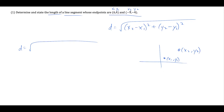We just plug right into the formula. We have x2 minus x1 squared, so we've got negative 9 minus 6, squared, plus y2 minus y1 squared, so in parentheses we have negative 4 minus 4, being squared. Just so you know, it doesn't matter which one we call x1, y1, or x2, y2, because at the end we're squaring this, so whether it comes out positive or negative, it doesn't matter.